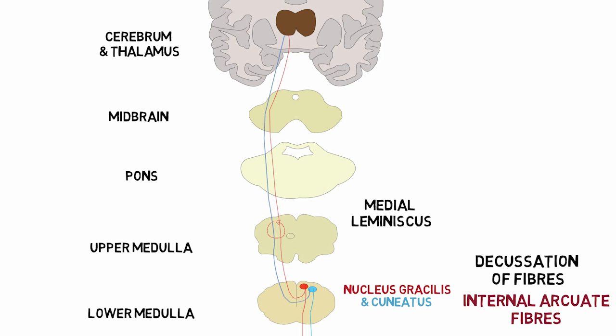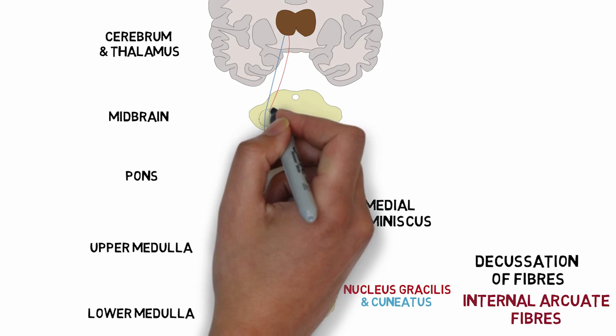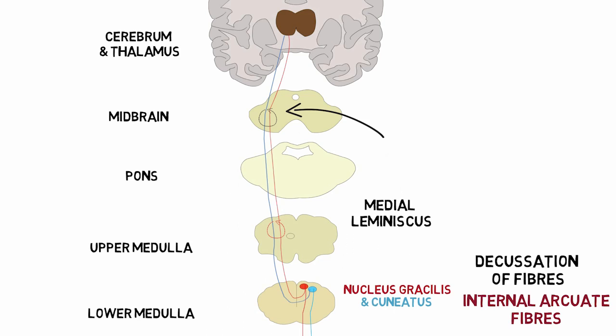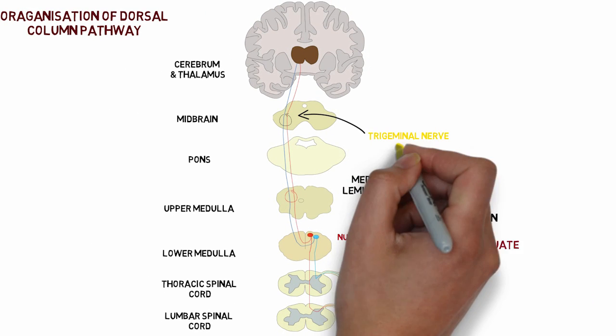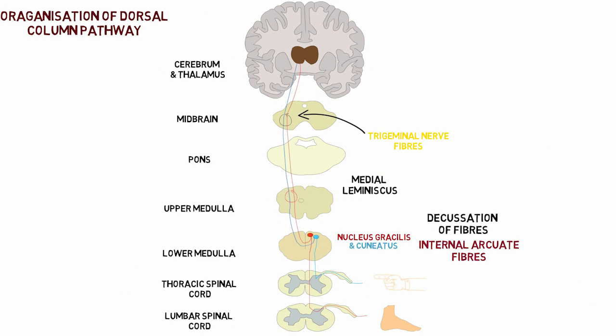In the midbrain, the medial lemniscus is joined by fibers coming from the fifth cranial nerve, the trigeminal nerve. These fibers bring sensory information from the head and neck regions.